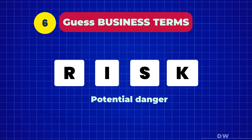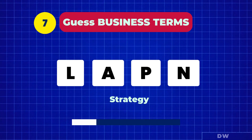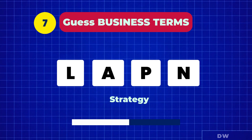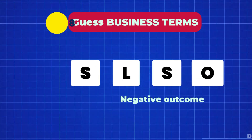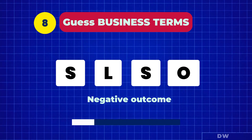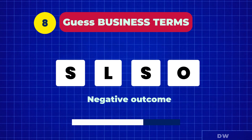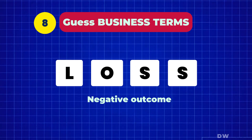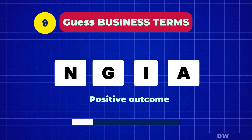Potential danger — risk. Strategy — plan. Negative outcome — loss.